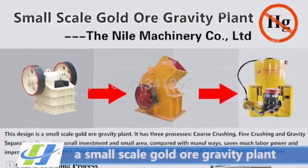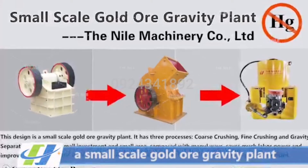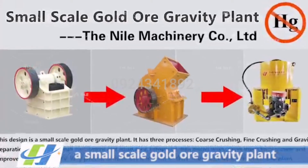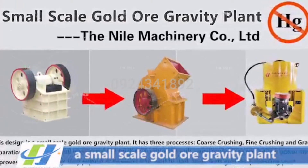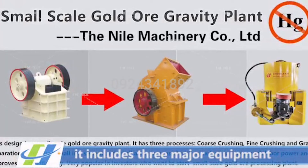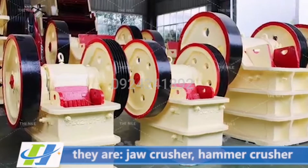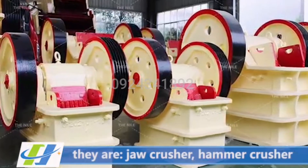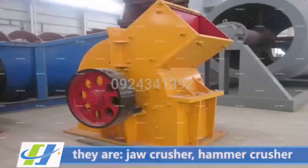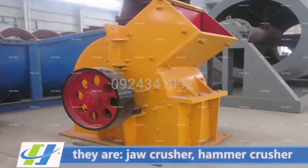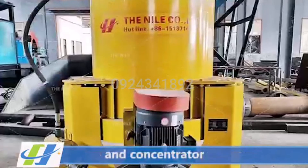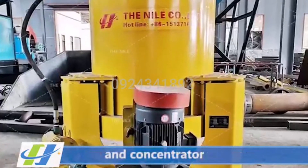This video shows a small-scale gold ore gravity plant. It includes three major equipment: a jaw crusher, a hammer crusher, and a concentrator.